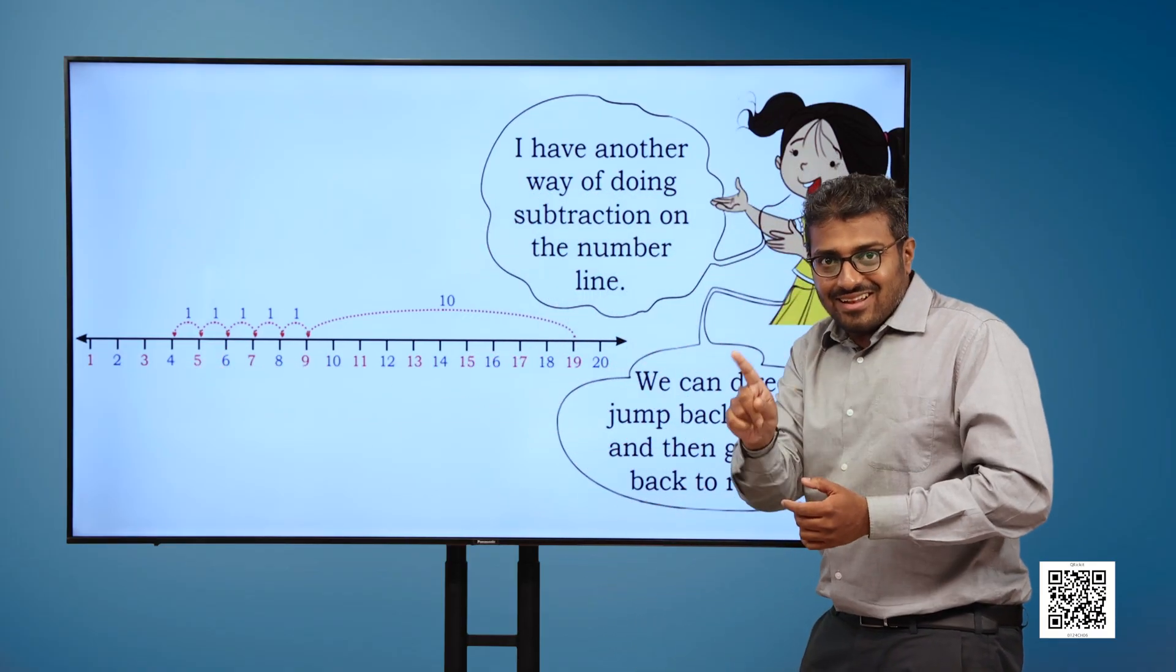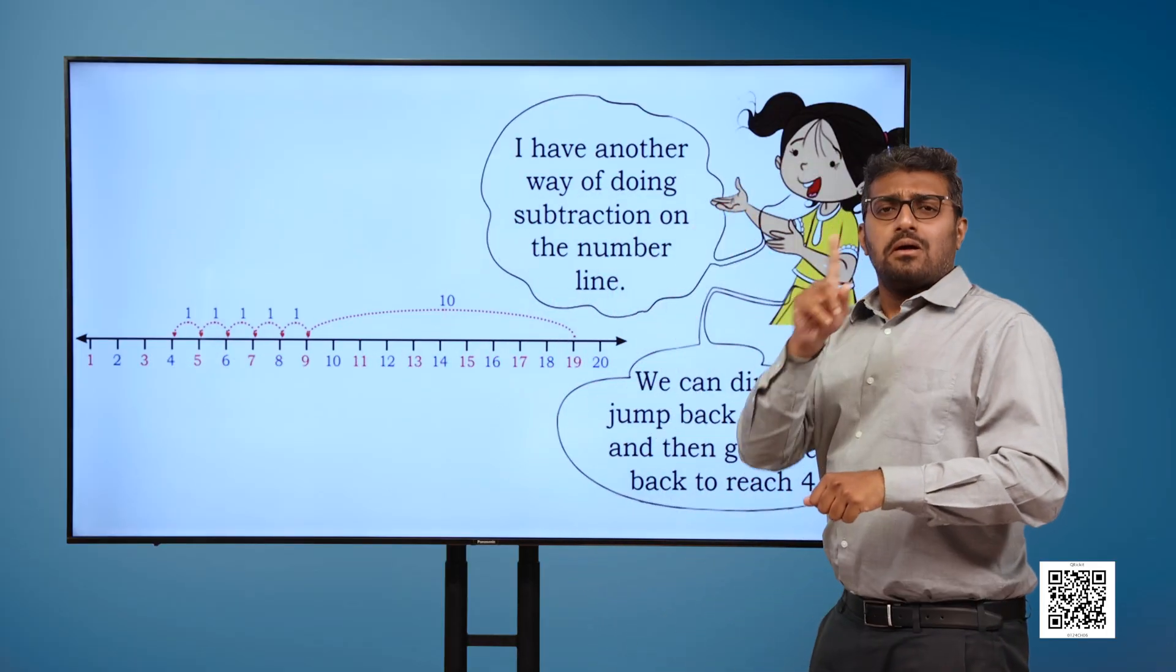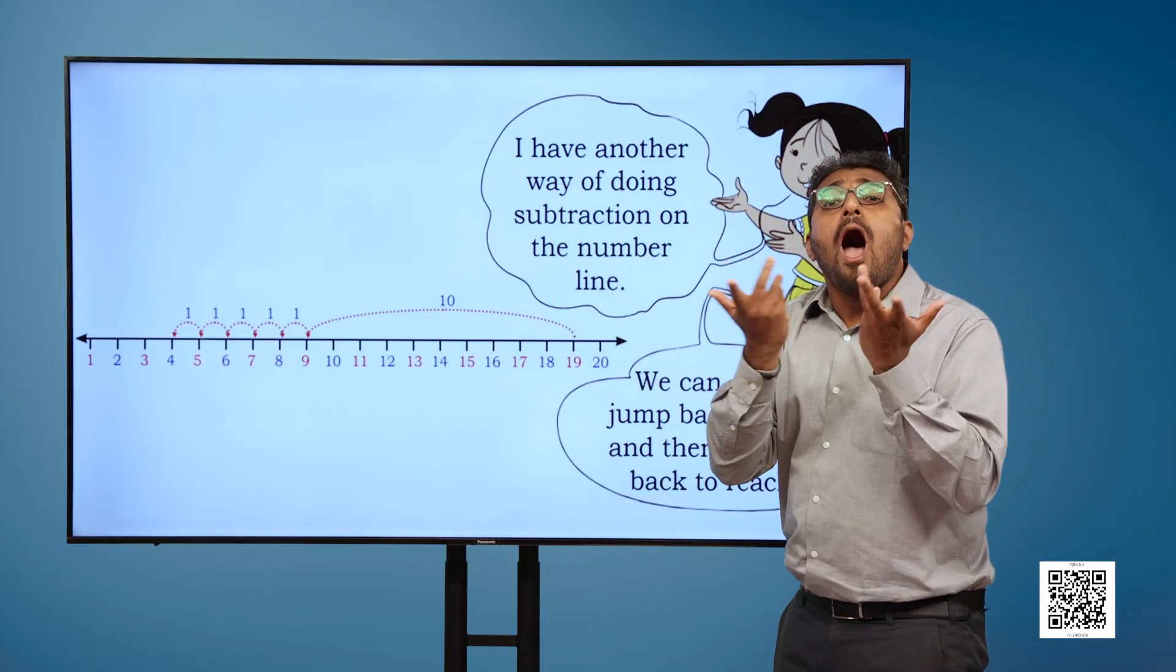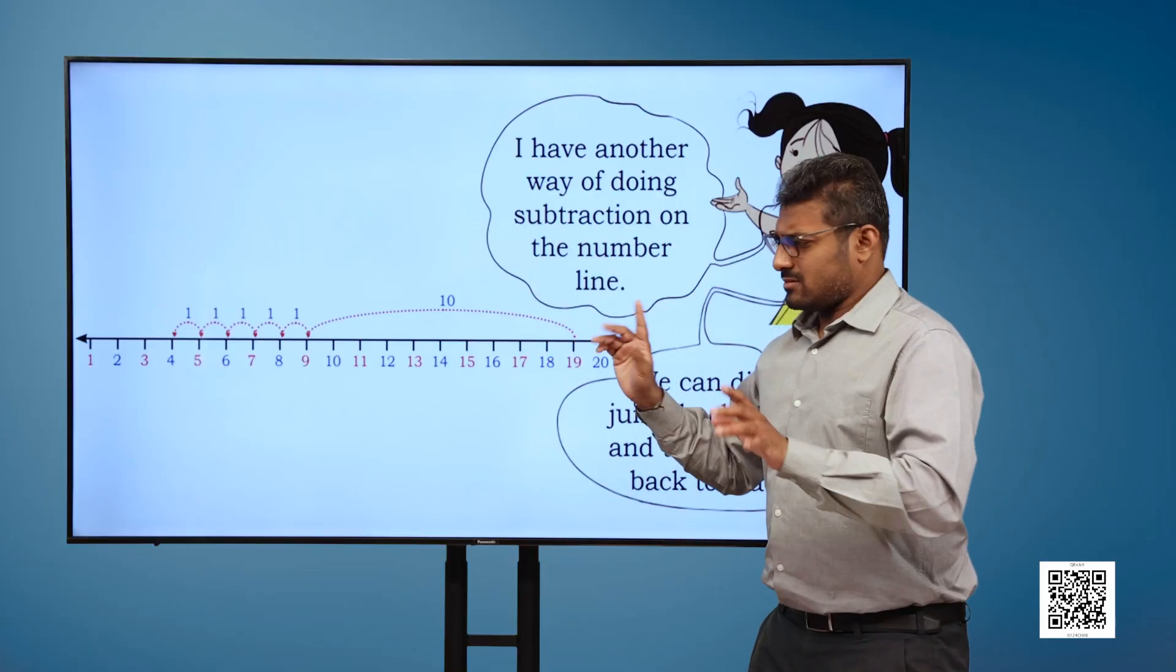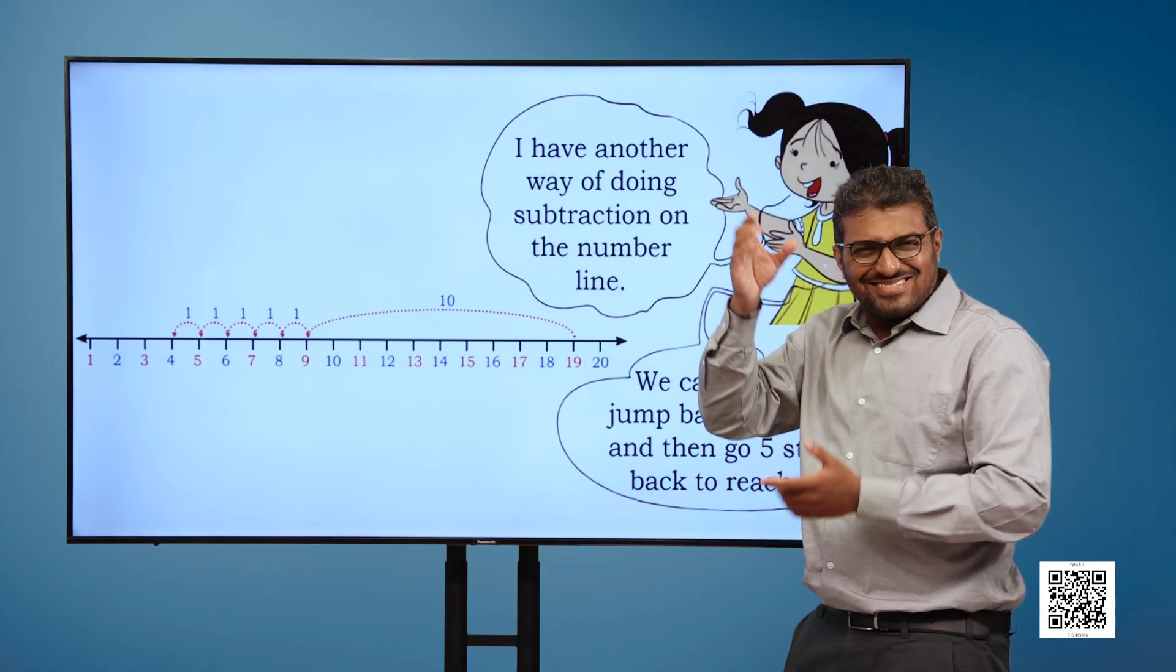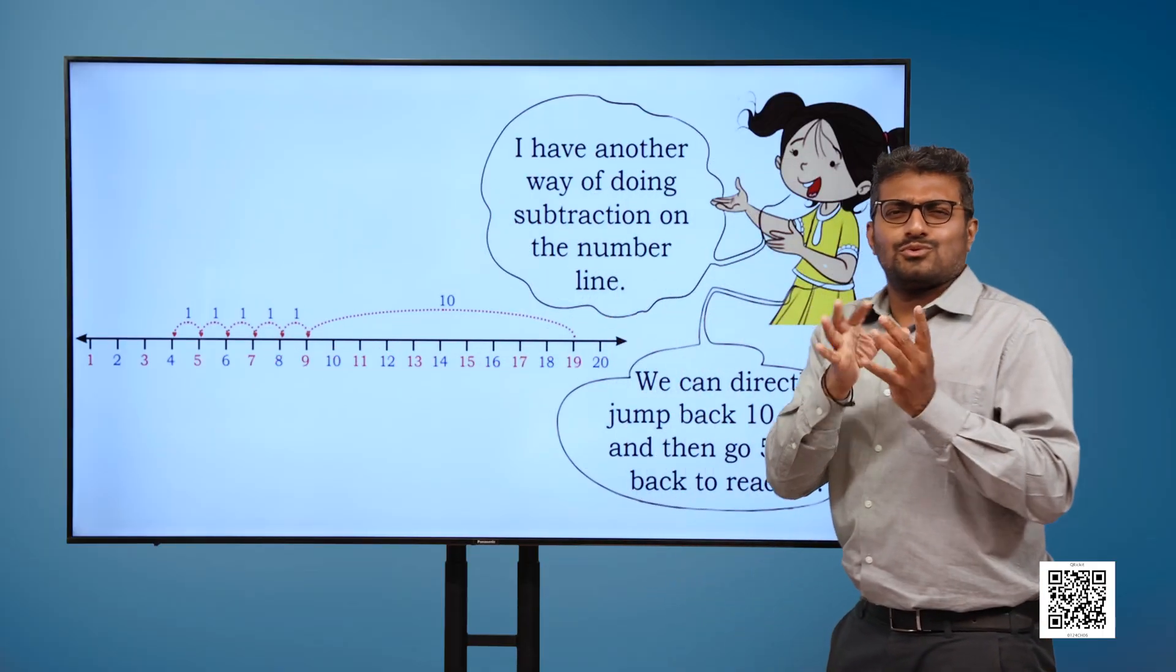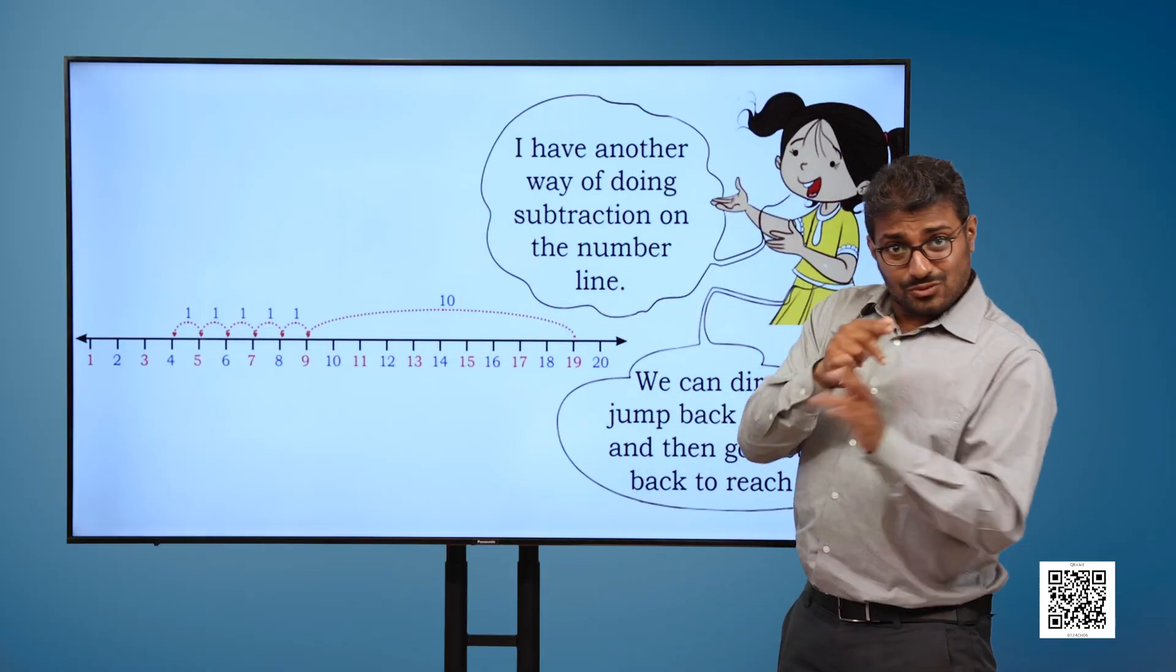We can directly jump back 10 steps and then go 5 steps back to reach 4. Now, we have a number line in front of us. It has numbers from 1 to 20. From 19, we go 10 steps backwards and arrive at 9. From 9, we subtract 5 ones or we go 5 steps backwards to arrive at 4.